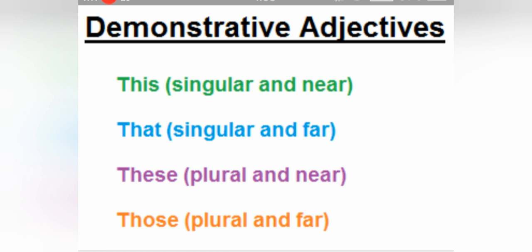Aur agar isi ko demonstrative pronoun mein bolenge, toh we say 'this is my book.' Aapko minor sa difference pata chala — yeh hamesha demonstrative adjective aur possessive adjective comes before noun. Whereas demonstrative pronouns and possessive pronouns do not come before a noun.